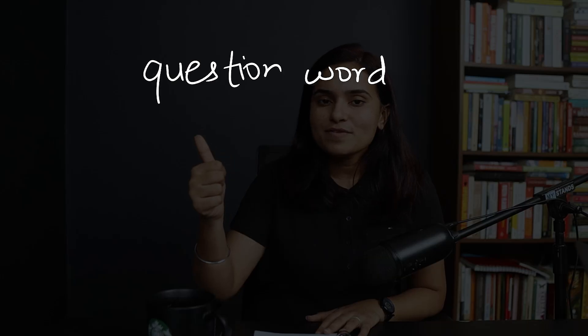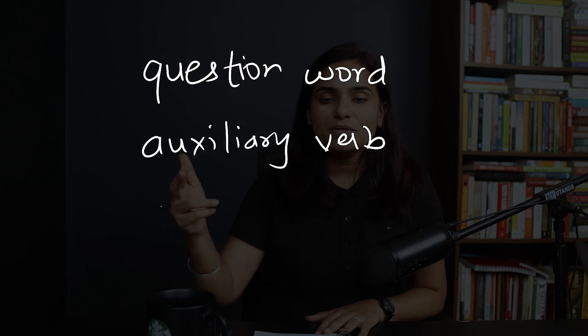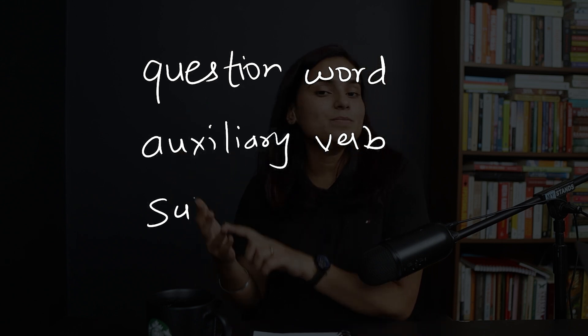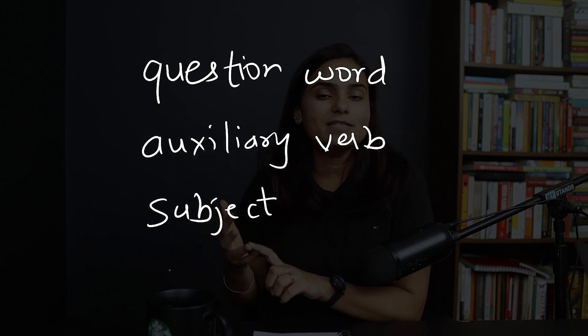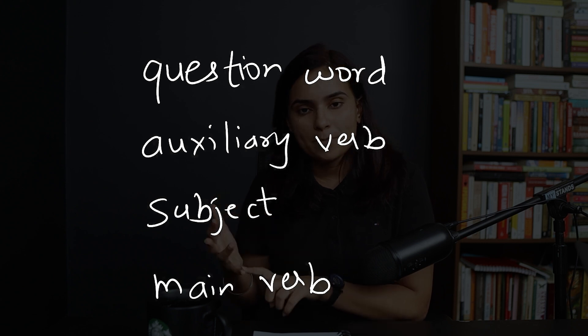Let's talk about the first and foremost important thing: knowing the structure of a proper question. There are four important elements — the question word or phrase, an auxiliary verb, a subject, and then your main verb. These four elements will be arranged in a sentence properly, and that's how you create a good question.